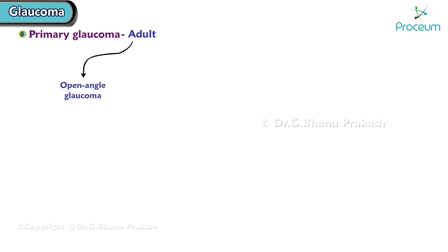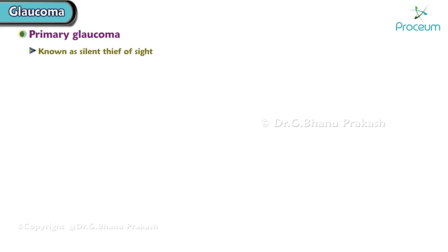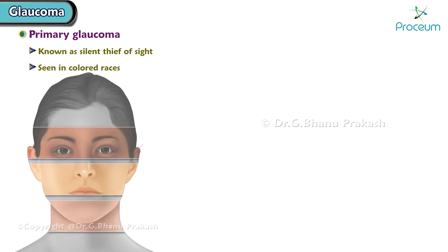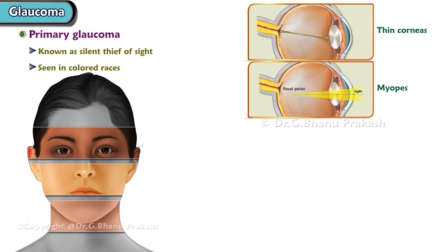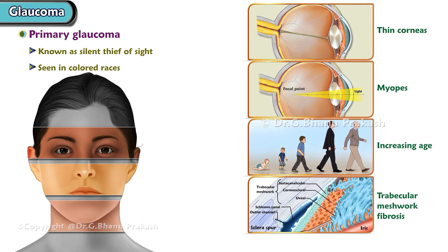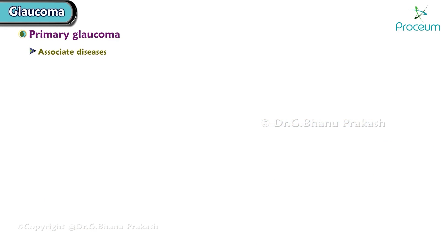Primary adult glaucoma can be of two types: open angle glaucoma and angle closure glaucoma. Primary open angle glaucoma is known as the silent thief of sight. It is usually seen in colored races, people with thin corneas, myopes, increasing age, trabecular meshwork fibrosis, and those with the myocilin gene and optineurin gene mutations, which predispose to open angle glaucoma.